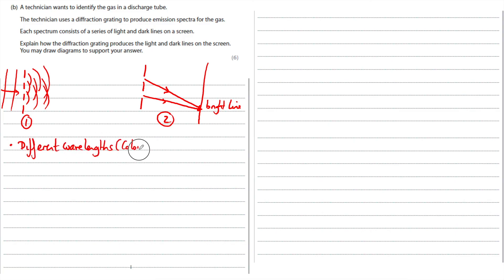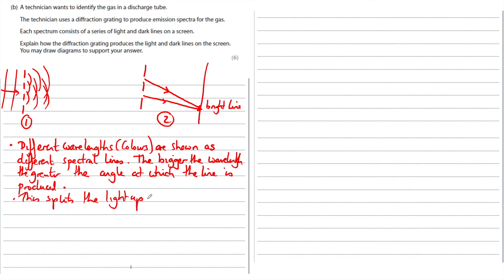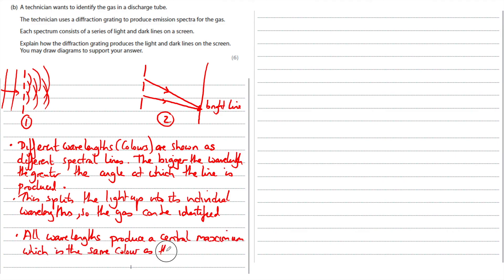Different wavelengths, colours, are shown as different spectral lines. The bigger the wavelength, the greater the angle at which the line is produced. This splits the light up into its individual wavelengths, so the gas can be identified. All wavelengths produce a central maxima, which is the same colour as the excited gas.